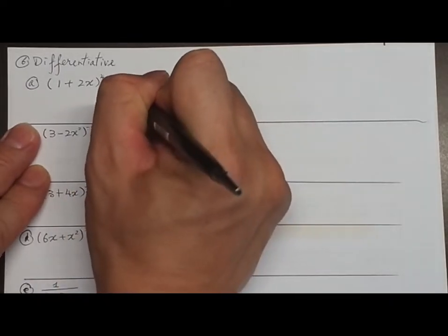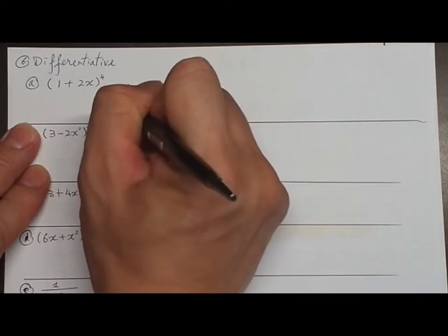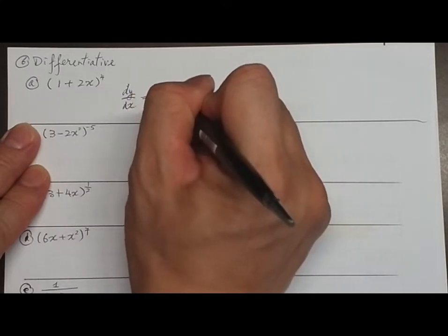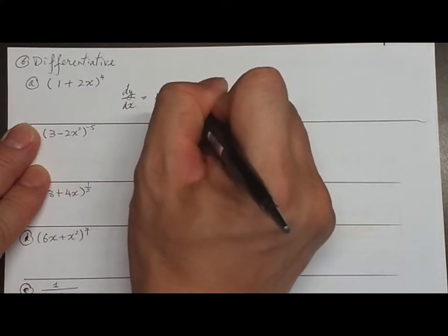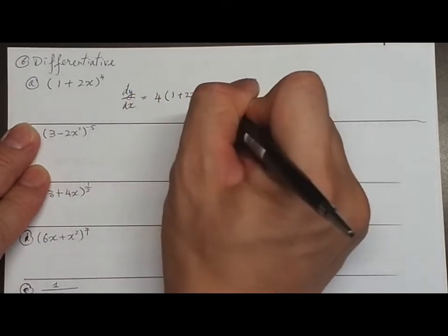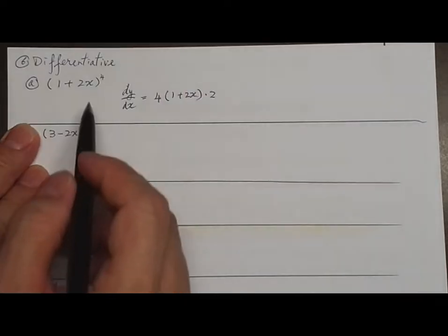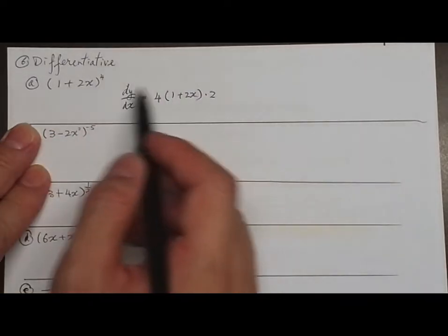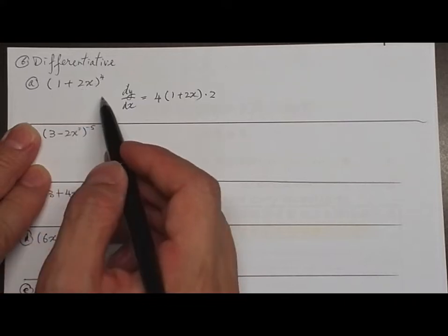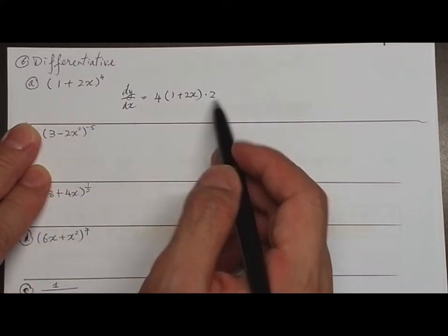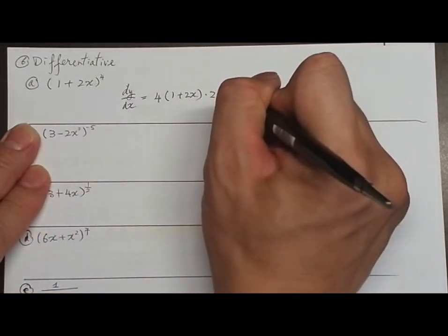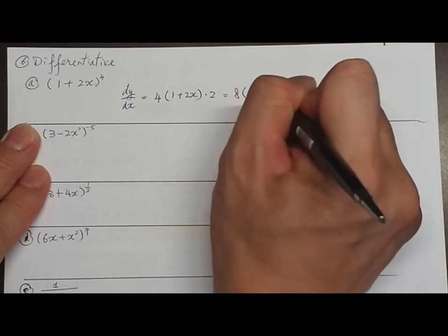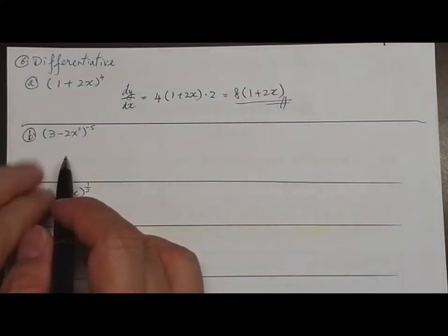Question 6 part A: Find the derivative of y equals (1 + 2x)⁴. dy/dx equals 4 multiplied by (1 + 2x)³ multiplied by 2. We differentiate the outside part first, then differentiate (1 + 2x) to get 2. So the answer is 8(1 + 2x)³.